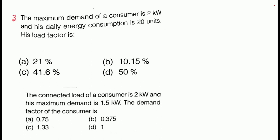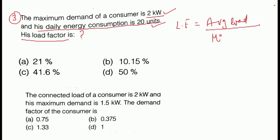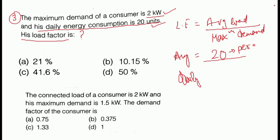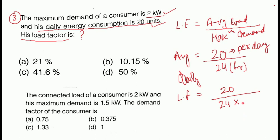Next is question number 3. The maximum demand of a consumer is 2 kW and his daily energy consumption is 20 units. His load factor will be what? Load factor is equal to average load divided by maximum demand. Average load equals total energy consumed — 20 units — divided by total time in hours. The daily energy consumption is 20 units, meaning 24 hours. So load factor = 20 / (24 × 2) = 0.4166, which as a percentage is 41.6%.